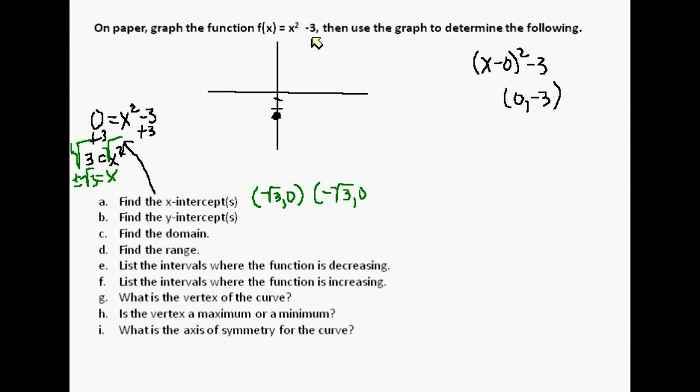Our x-intercepts are at (√3, 0) and (-√3, 0). To place them on the graph I'd use a calculator to find the decimal, but leave exact answers for your assignment. It's at about 1.7 and negative 1.7.